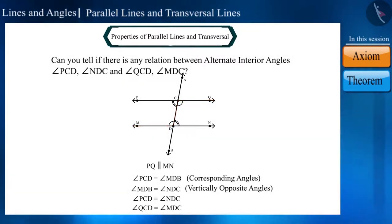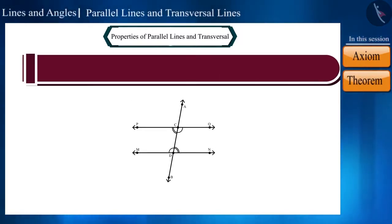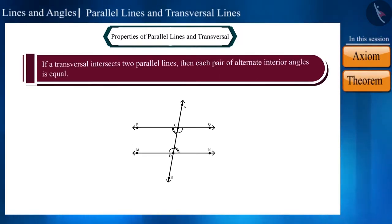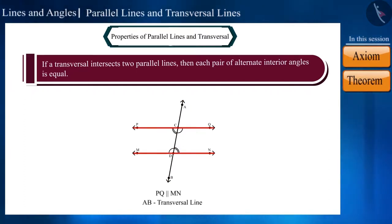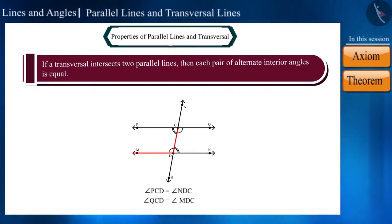Now we can write our result as a theorem: if a transversal intersects two parallel lines, then each pair of alternate interior angles is equal.